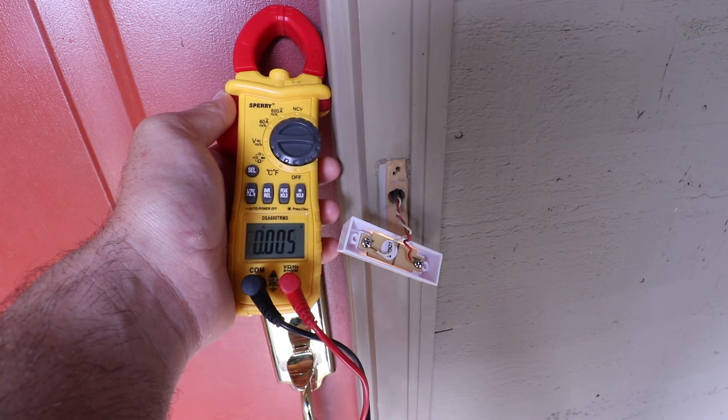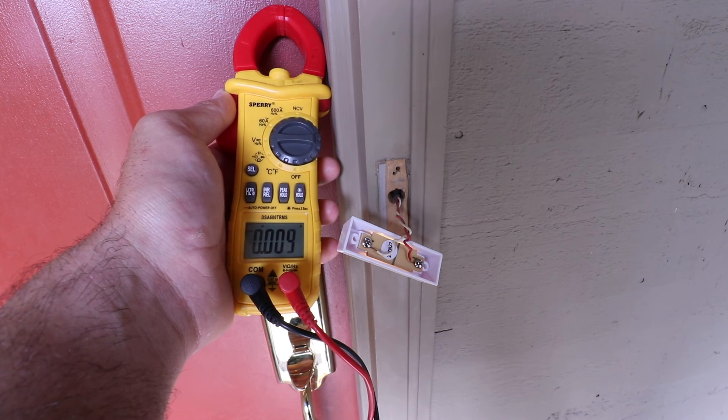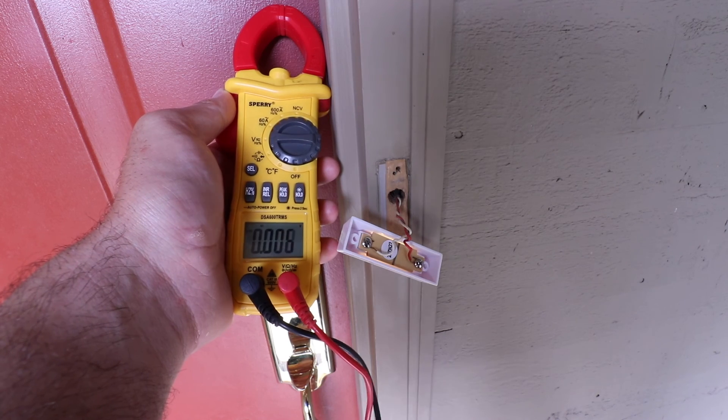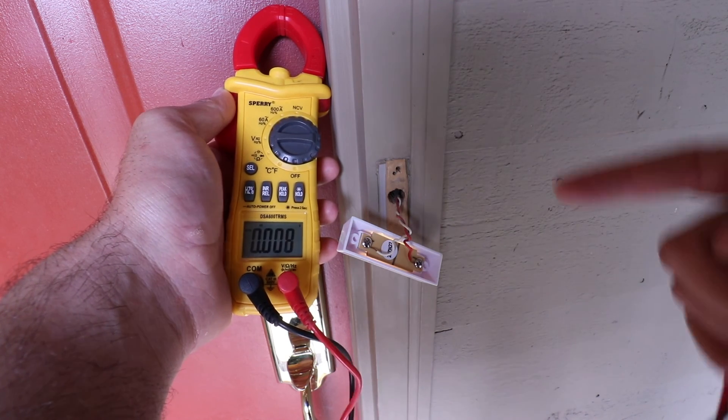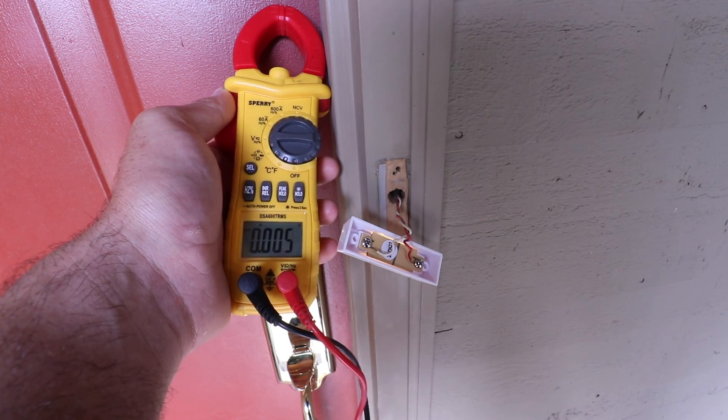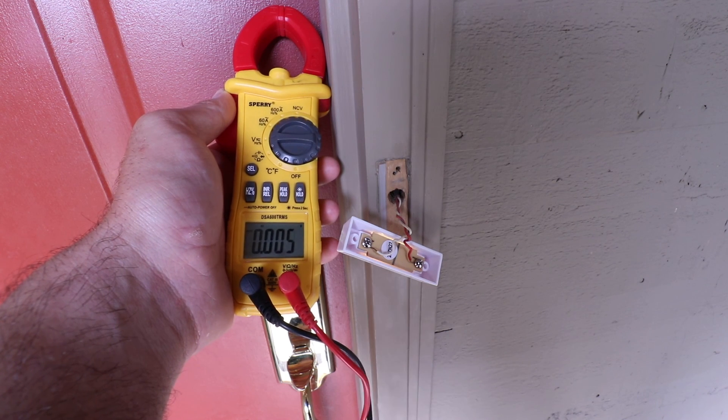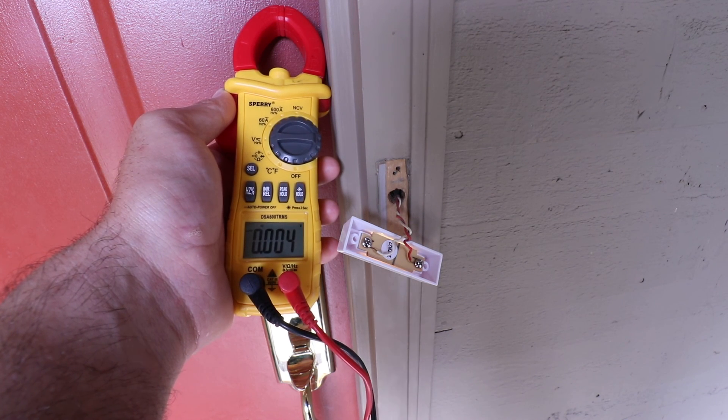So thank you for watching this video on how to test your doorbell voltage or how to test your doorbell transformer voltage. Please give us a thumbs up, subscribe, and click any links below if you want to support us. We're going to have a link to doorbells that would work with this voltage around 12 volts down below. If you're interested in a smart doorbell that will work with lower voltage go ahead and look at the description below. Thanks again and we'll see you next time.